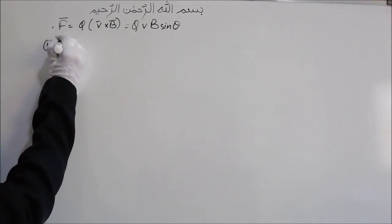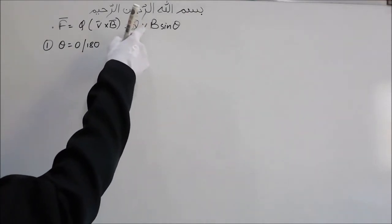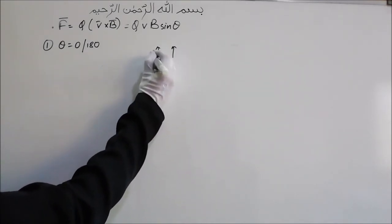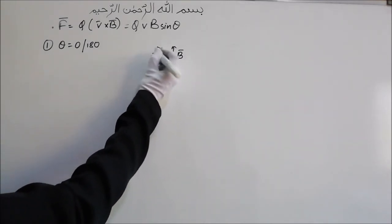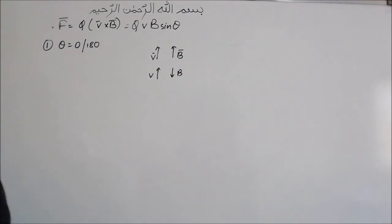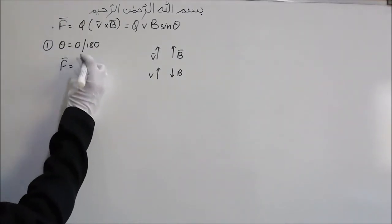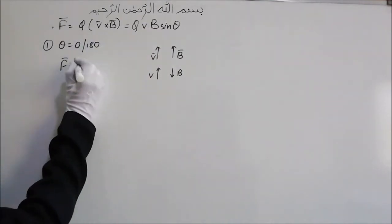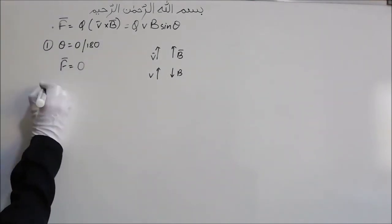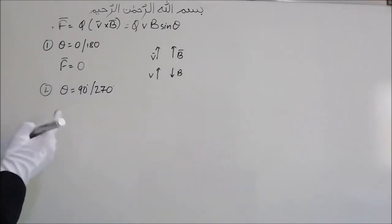Case 1: if θ equals 0° or 180°, that means the angle between V and B is 0° or 180°. When θ = 0° the velocity and B are in the same direction; when θ = 180° the velocity is upward and the magnetic field is downward. In that case, sin 0° = 0 and sin 180° = 0, so the net force on charge Q is zero and the path of the charge will be a straight line.